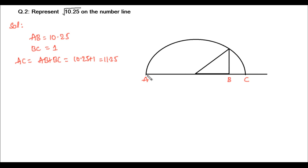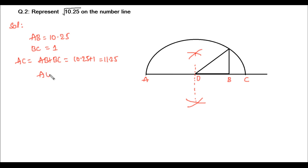Now let's find the midpoint of AC. We draw arcs with A as center and C as center using more than half the distance as radius. The arcs intersect on both sides, and joining those two intersection points gives us the midpoint, which we mark as O. So AO equals 11.25 divided by 2, and O is the midpoint of AC. With O as center and AO as radius, we draw a semicircle.